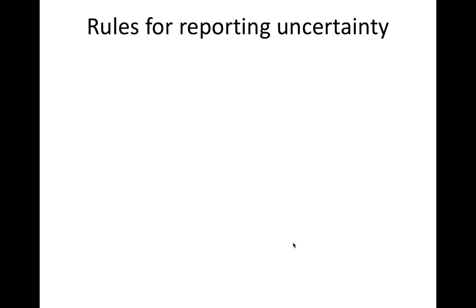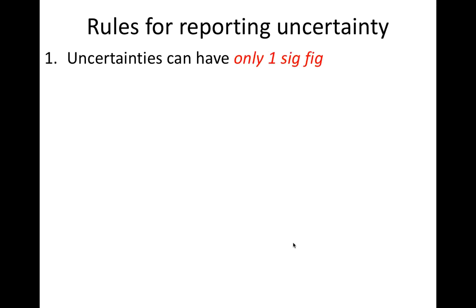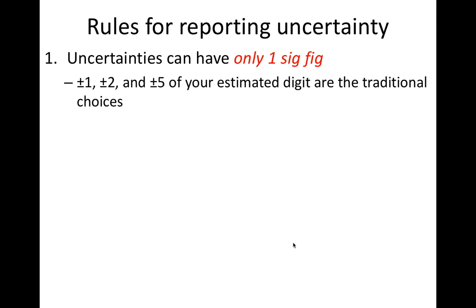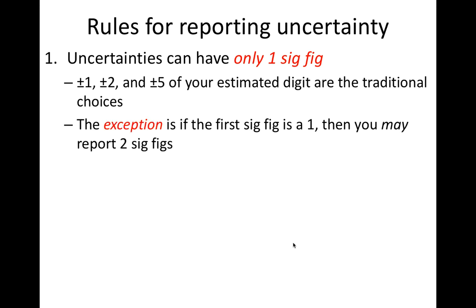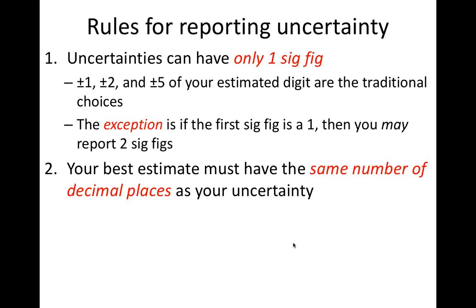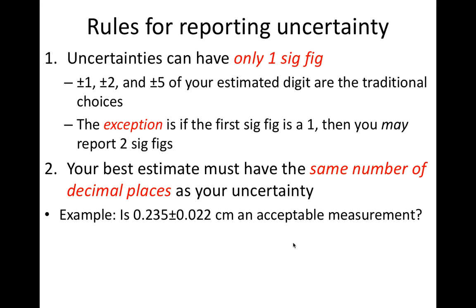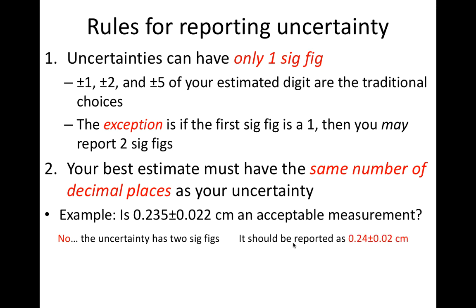This slide contains the two rules for reporting uncertainties. First, uncertainties should be reported with only one significant digit. The exception is that if the first significant digit is a 1, you may report a second significant digit. Second, your best estimate for a measurement should always be reported to the same number of decimal places as your uncertainty. For example, in this measurement the uncertainty is shown with two significant digits, which breaks the rules. The uncertainty should be rounded to one significant digit — 0.02 in this case — and then the best estimate should be rounded to two decimal places, or 0.24.